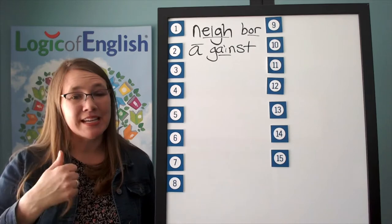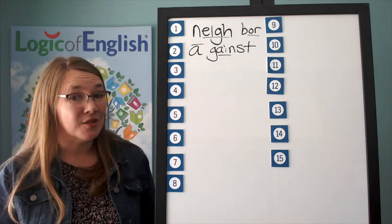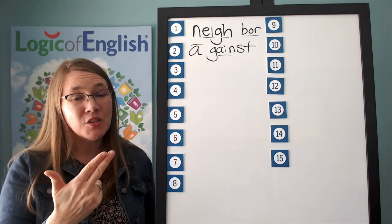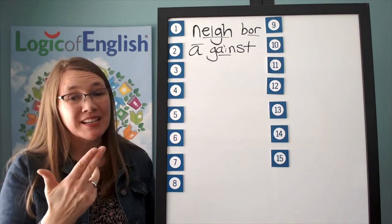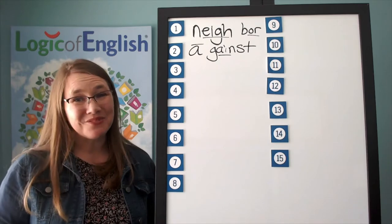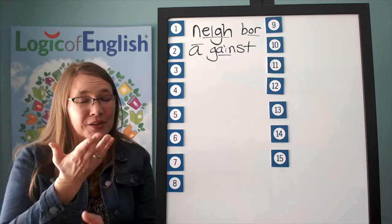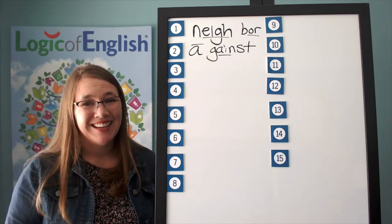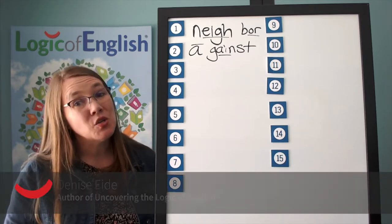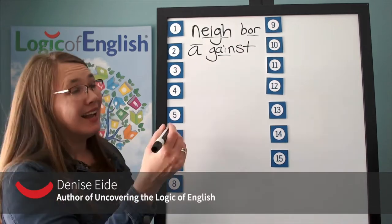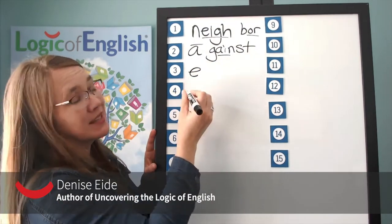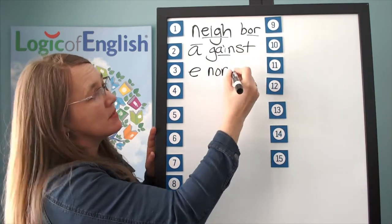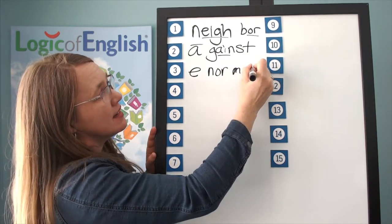Let's sound it out. The first syllable is E. The second syllable is NOR — N-OR. The third syllable is MUS — M-U-S. Go ahead and write E-Normous. Excellent. Help me to write it: E, N-OR, M-U-S.